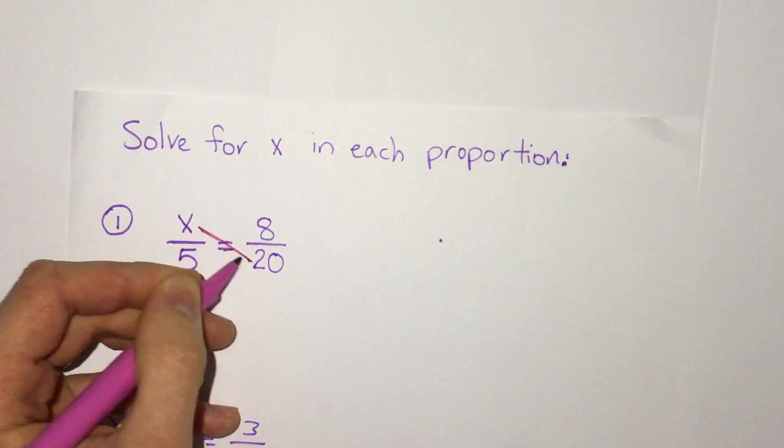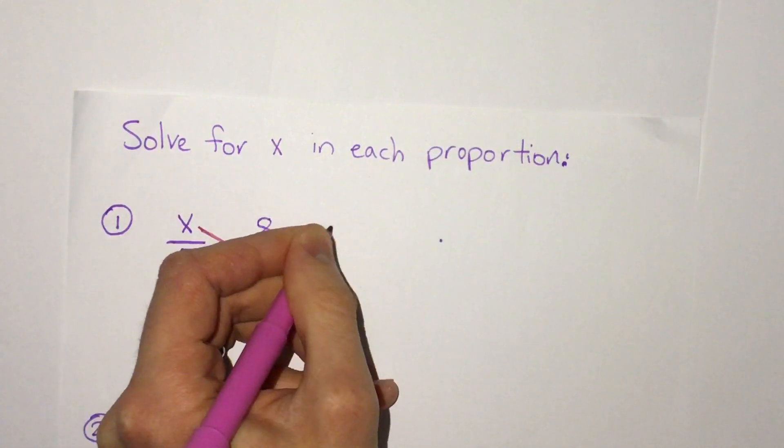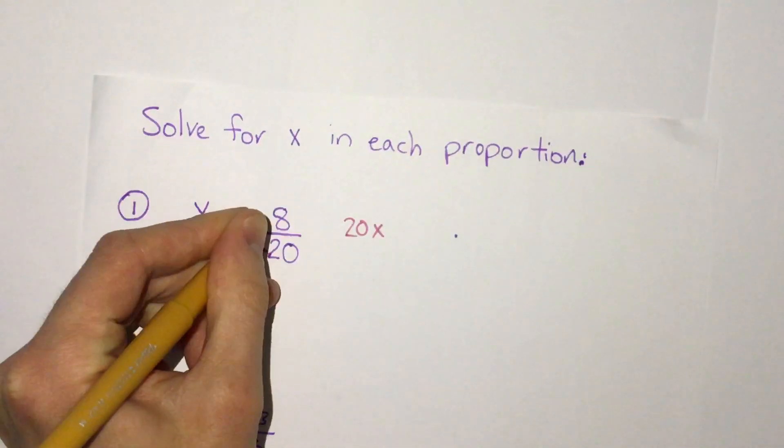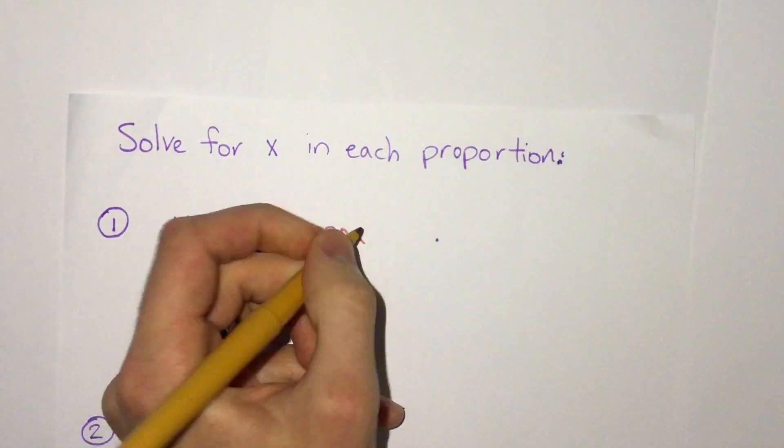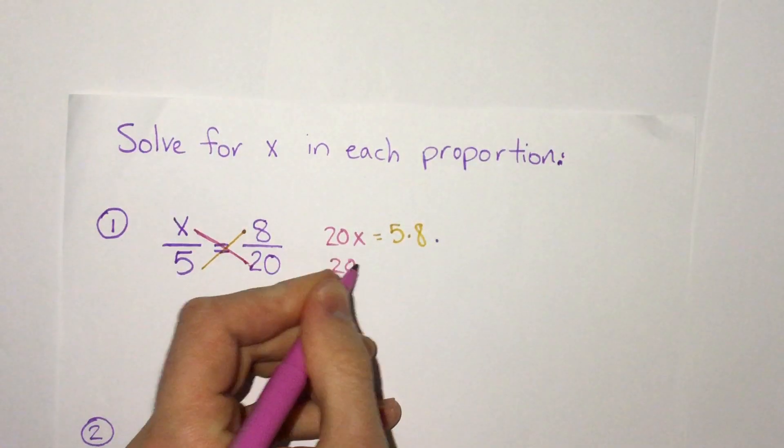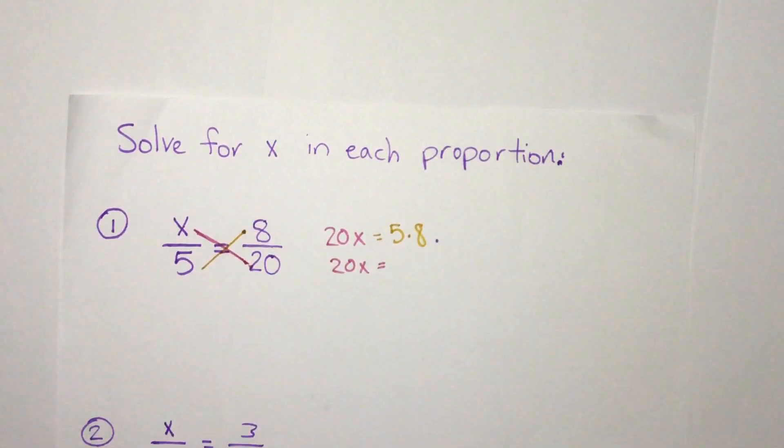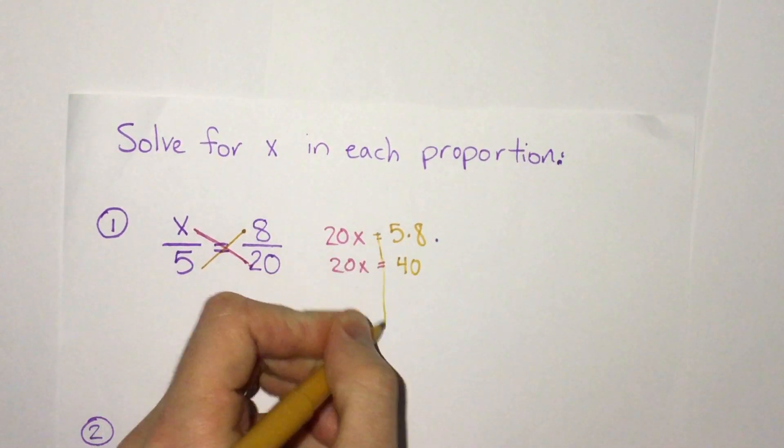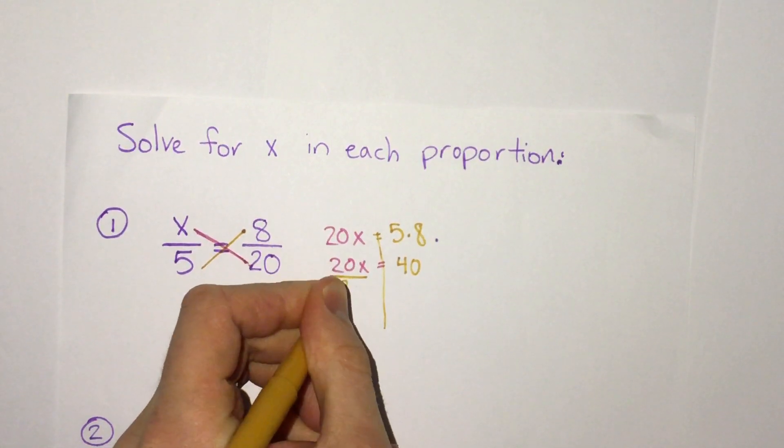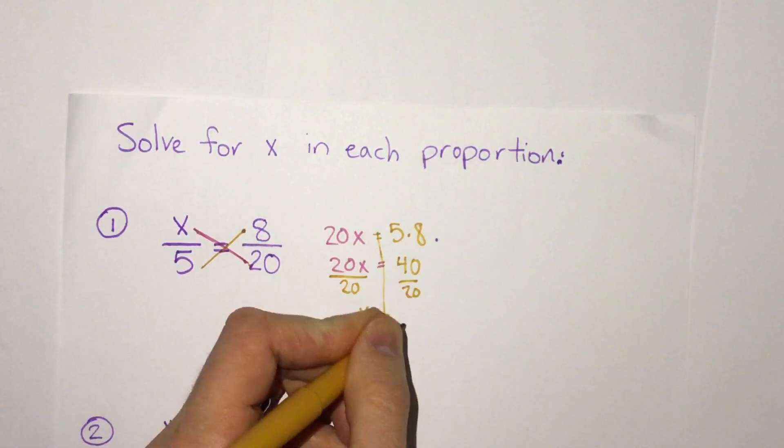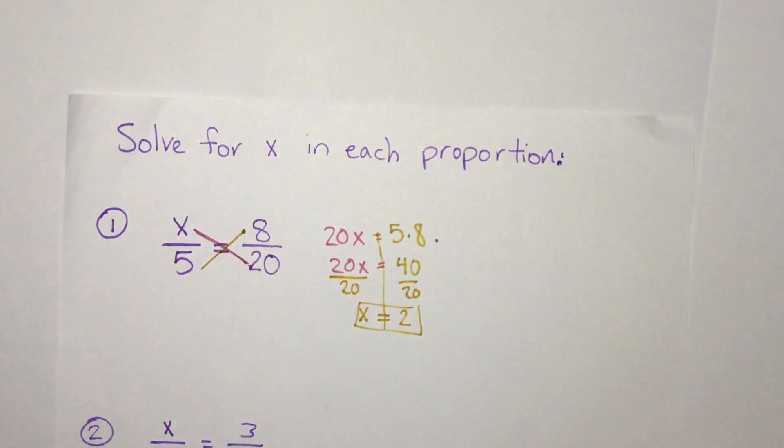So here that would mean we multiply 20 and x which would become 20x, and then we're also gonna multiply 5 times 8, so we get 20x equals 40. From there we have an equation that's usually fairly simple to solve. We can divide by 20, so 20 divided by 20 is x, and 40 divided by 20 is 2. Our answer is 2.